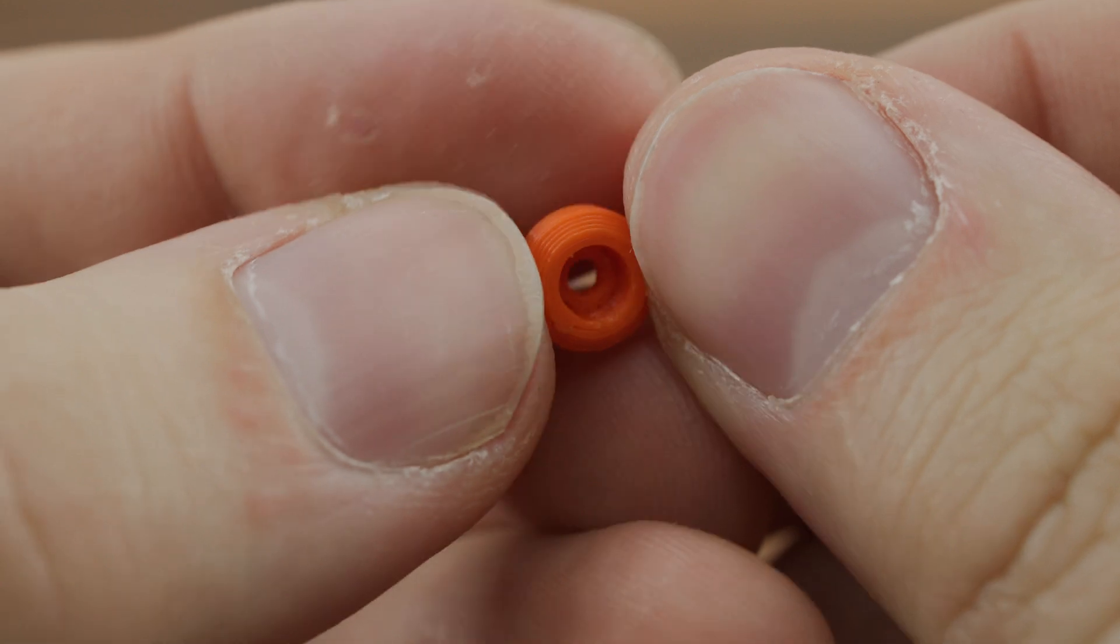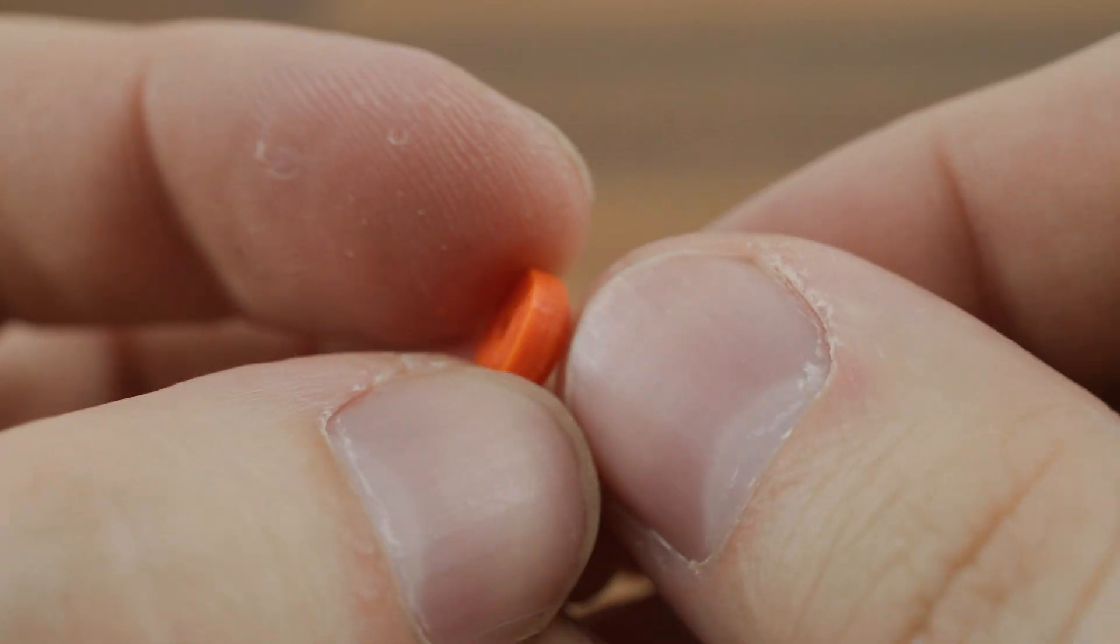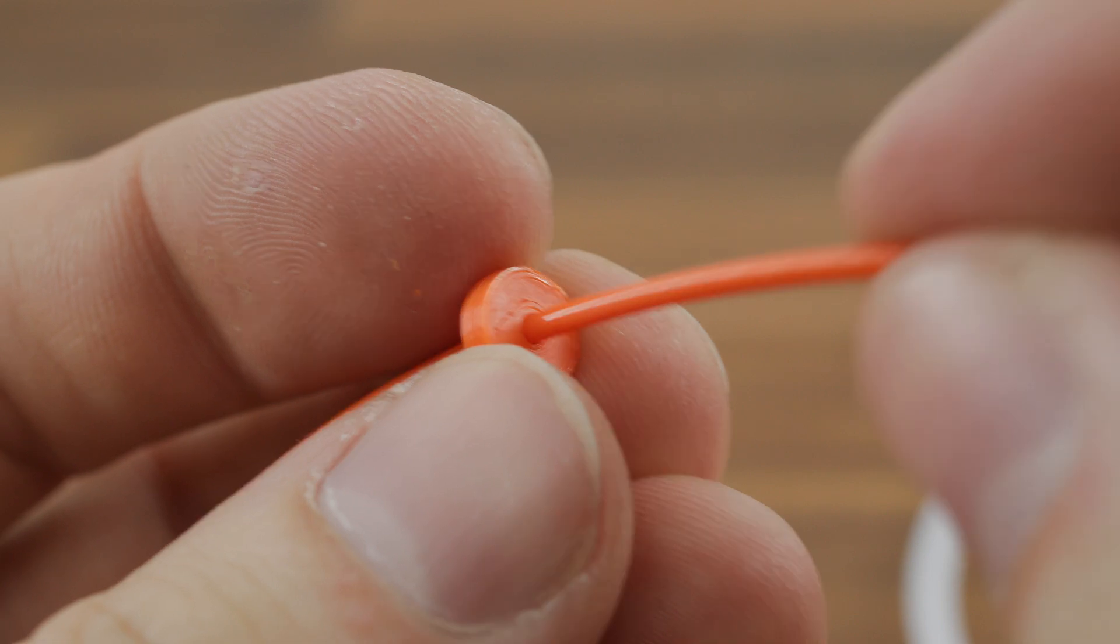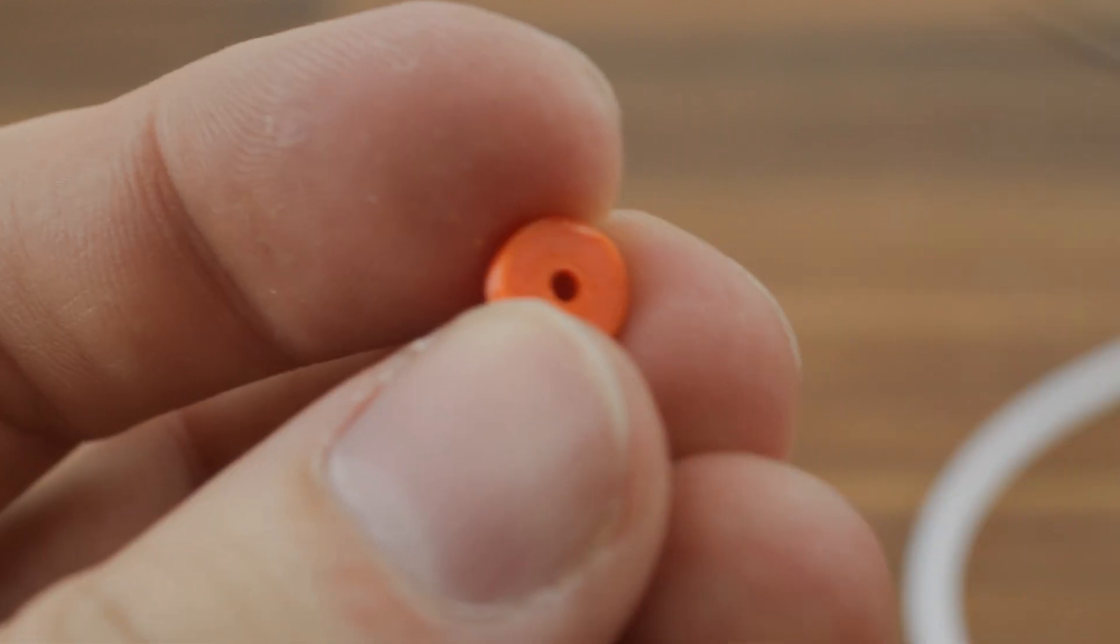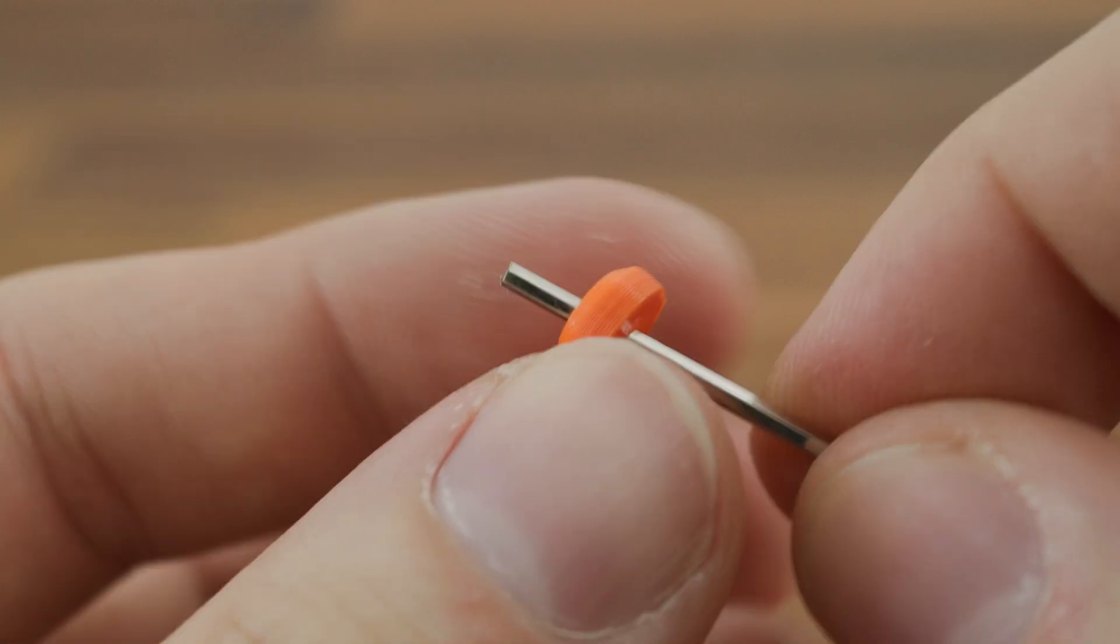Now it's time to install the separator. Before installing it, make sure that the filament can pass through it without a single problem. If necessary, slightly widen the inlet opening.